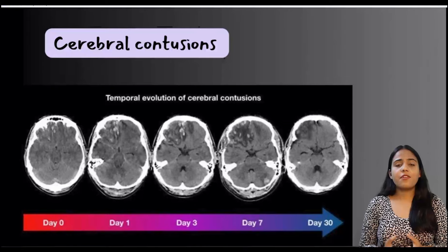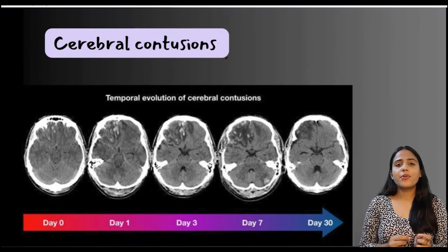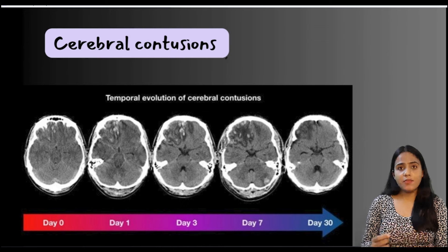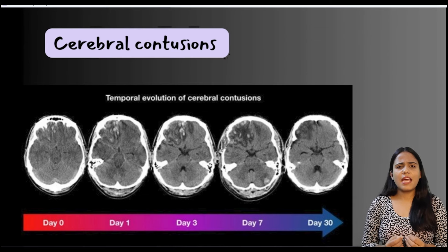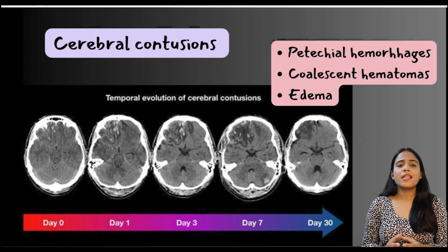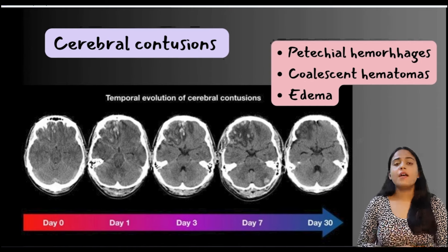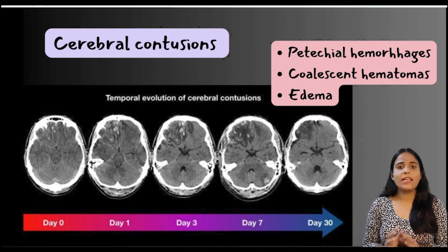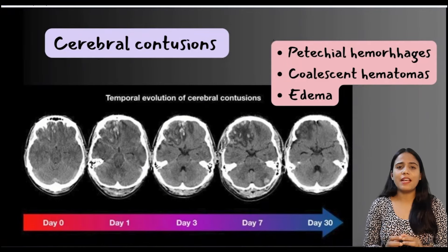This picture taken from Frank Gailard's Twitter shows the temporal progression of a cerebral contusion. Initially we see tiny petechial hemorrhages at the gyral crest near the calvaria. Later on they coalesce and form larger hematomas. In the later stages, these petechial hemorrhages also get surrounded by patchy ill-defined hypodense areas of edema.